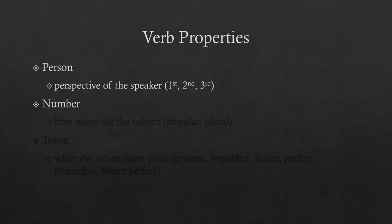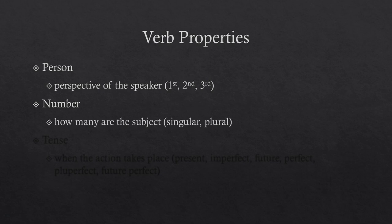Another property is number. Be careful not to get it mixed up with person, since the options for person are one, two, and three. When we use number, we're talking about how many people are doing the action — the subject. Are we talking about one person or thing, or multiple? Anything more than one is plural; if it's just one, it's singular. So if I'm doing something, that's first person singular. If we are doing something, that's still first person but now plural.